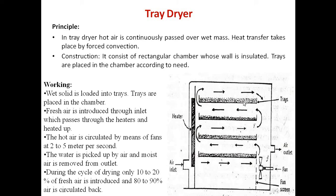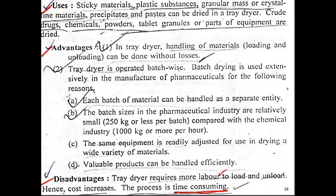The wet solid is placed on the trays. Fresh air is introduced through the inlet, and hot air is circulated by the fan at a rate of 2 to 5 meters per second. The heater heats the air and the substance, which then releases moisture; this moist air is carried away by the circulating air. During the drying cycle, 10 to 20 percent fresh air is introduced while the remaining 80 to 90 percent is recirculated.